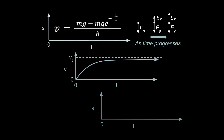Going from the velocity-time graph to the acceleration-time graph: you take the derivative, which on a graph means looking at the instantaneous slope of tangent lines. The slope is greatest early on and lesser as time goes on, approaching zero. So the acceleration graph has its greatest value at an early point in the fall, then levels off and eventually approaches zero as time approaches infinity.